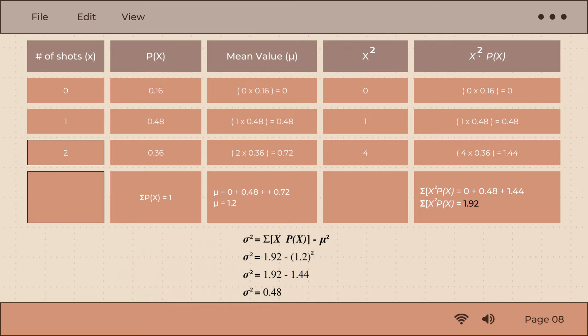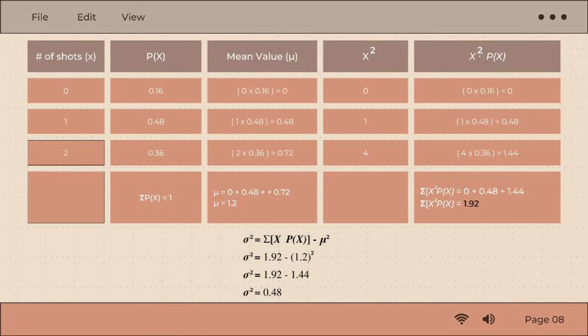Now, we are going to use the same example from the mean. Earlier, we arrived with the answer, mean equals 1.2. Here, we just added another column for x squared where x is the number of shots, which becomes 0, 1, and 4, and another column for x squared multiplied by p of x.